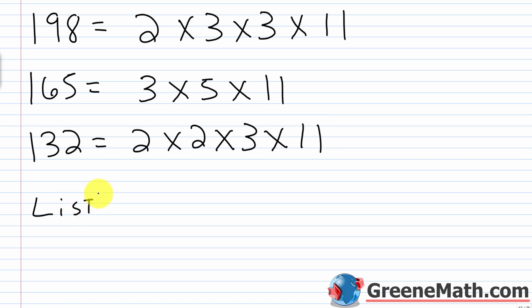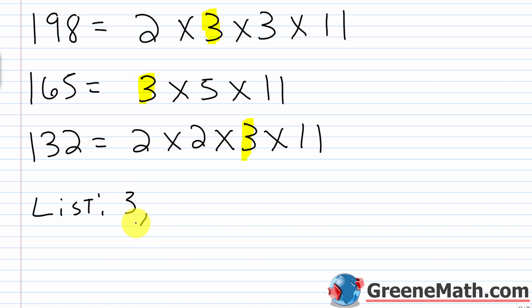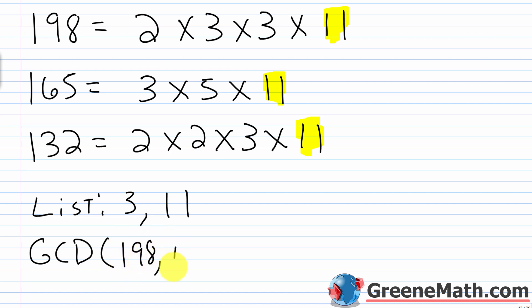Now forming the list of common factors: 2 appears in 198 and 132, but not in 165, so it can't be used. Three appears in all three numbers, so we put one factor of 3 in the list. There's a second 3 in 198, but not in 165, so it can't go in. Eleven appears in all three numbers, so we include it. The GCD of 198, 165, and 132 is 3 × 11 = 33.